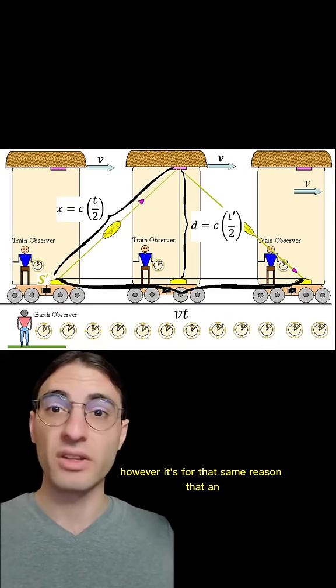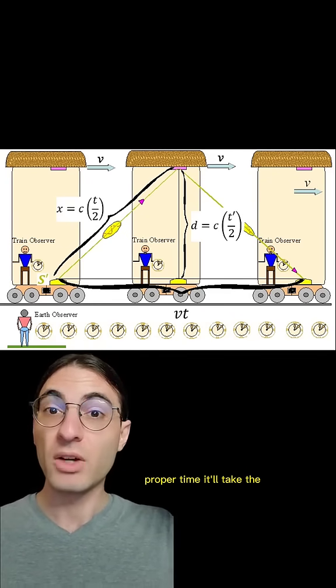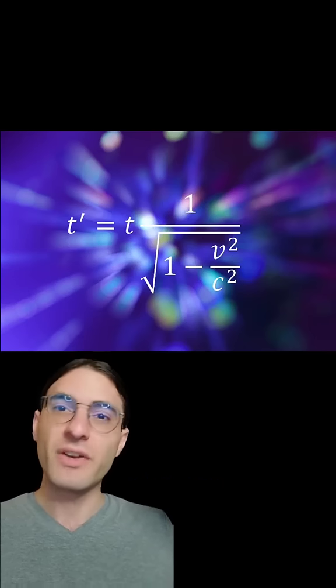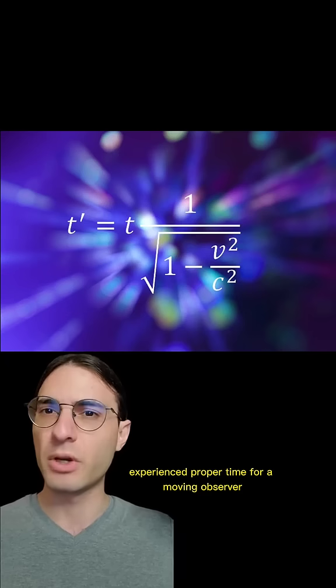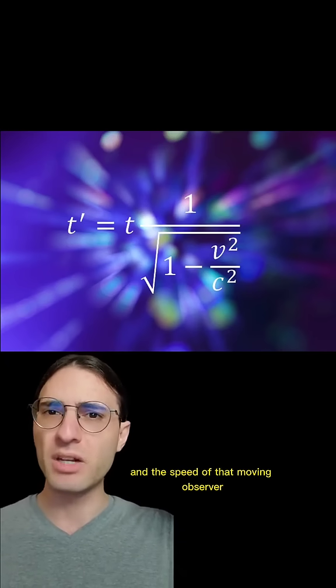However, it's for that same reason that an object moving faster than you will appear to have a slower proper time. It'll take the photon clock longer to travel between the mirrors since the mirrors are moving. In fact, there's a nice formula that relates experienced proper time for a moving observer relative to another observer and the speed of that moving observer.